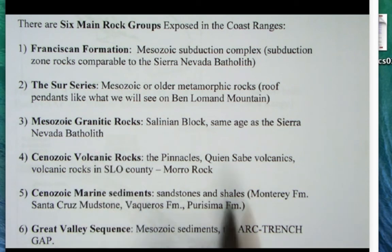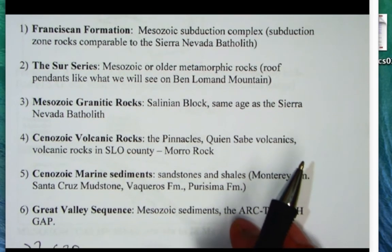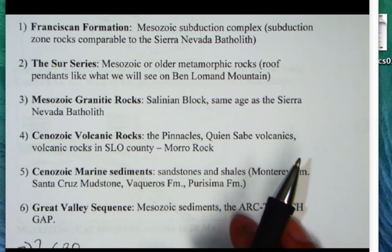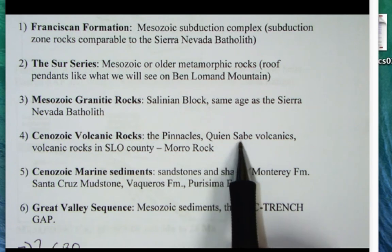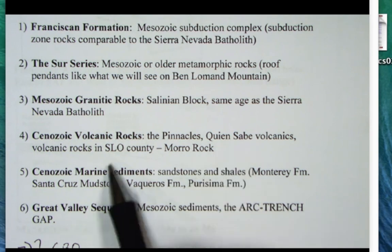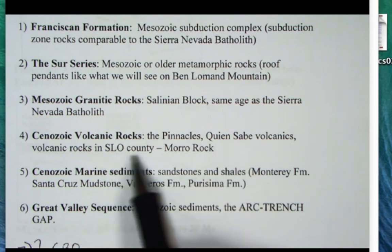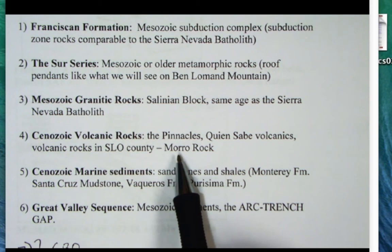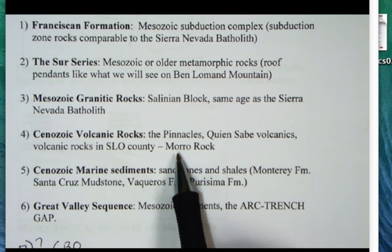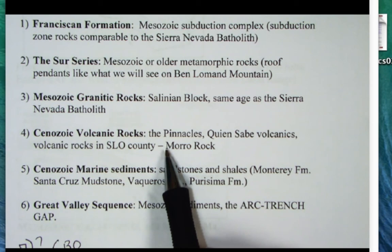The fourth group are the Cenozoic volcanic rocks: the Pinnacles, the Quien Sabe volcanics near Hollister that you pass over on Highway 152 at Pacheco Pass, the San Luis Obispo volcanics, Morro Rock, and also the Sonoma volcanic field and the Clear Lake volcanics up north.